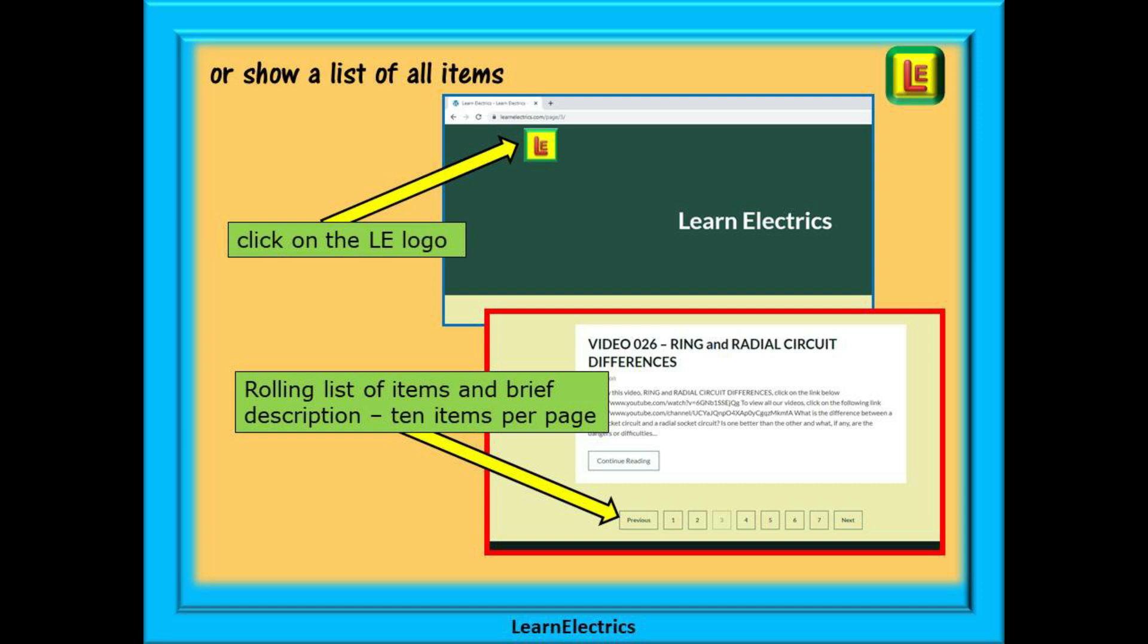To do this, click on the LE logo on the top left of the home page and all of our items and videos will be shown. There will be 10 items shown on each page and at the bottom of each page is a page selector: page 2, 3, 4 and so on, that will bring up the next 10 items or videos in the list.